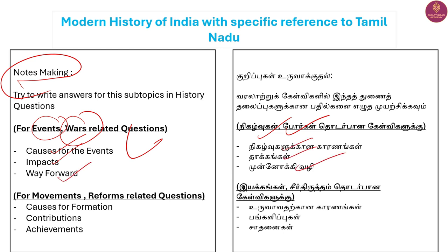The causes and impacts are very important. Even if you learn a non-cooperation movement, understand the causes. Which is the main divide and what is taken over. For example, you will be aware of the non-cooperation movement, the civil disobedience movement, and the social justice reform movement.